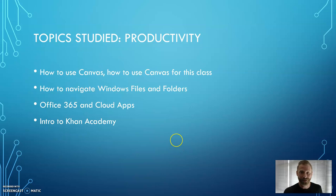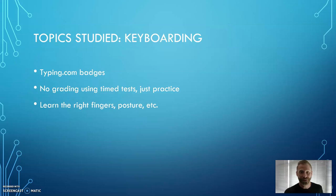We also work on keyboarding. We use a site called typing.com, and we earn badges through that site as we practice. We really work on using the right fingers and posture to develop speed over time, which will help you in a lot of different classes at Centennial and Snohomish. In terms of grading, we don't grade you on your time — we just want you to practice and develop the right skills and habits to build that speed slowly over time.